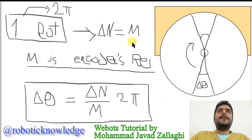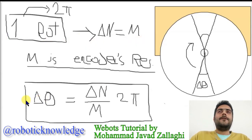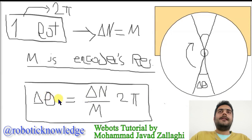Based on this relation, I can say that for a delta theta — not a full 2π rotation — the change in angle of the wheel is equal to delta N over M times 2π.